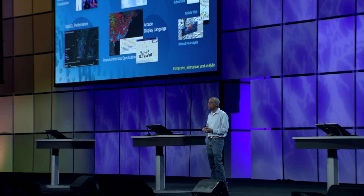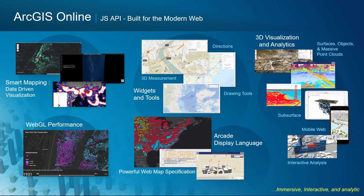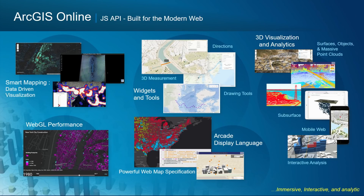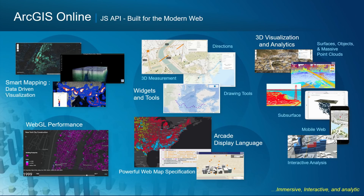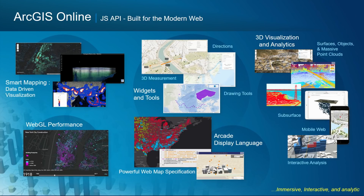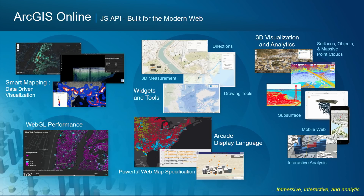It also includes easily configurable story maps and dashboard apps, as well as a JavaScript API built for the modern web. It's performant, responsive, and made for mobile devices. All of that smart mapping is available to applications via this API — high performance WebGL on features, on vector tiles, on 3D data in scenes. There are widgets and tools, as well as interactive analytics client-side. You're going to see all of this this morning.